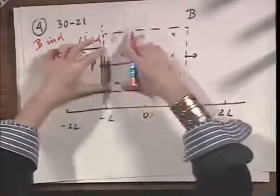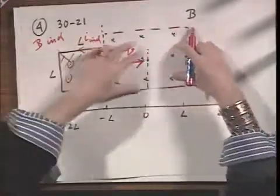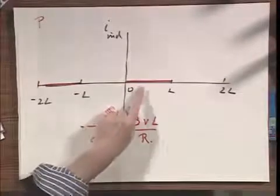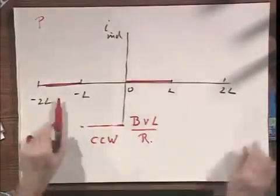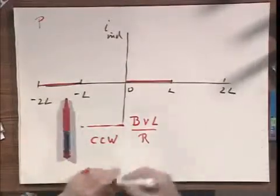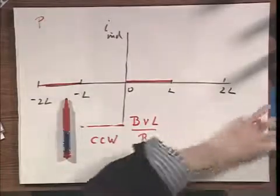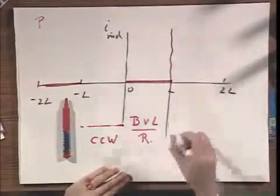When the loop is in here, all the way marching up to here, there is no flux change. So the induced current goes to 0. And this now is the part all the way on the right side here.